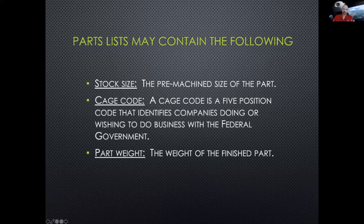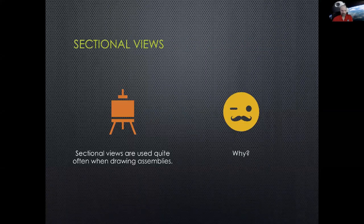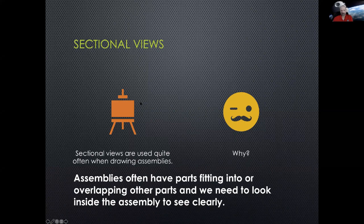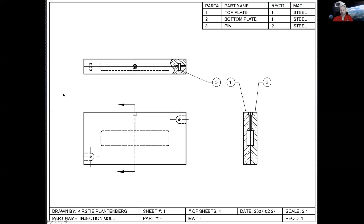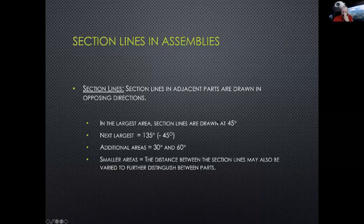Section views are used quite often when drawing assemblies because assemblies often have parts fitting into or overlapping other parts, and you need to look inside the assembly to see it clearly. For example, you can see inside an injection mold to see where the pin is located because it's inside the two halves of the mold. Section views let you show the interior of assembled components clearly.